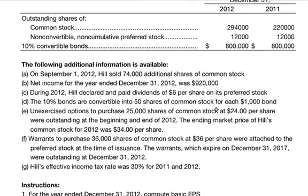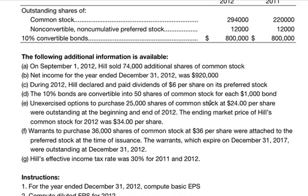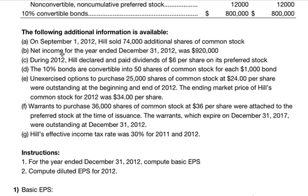The following information is available: on September 1st 2012, Hill sold 74,000 additional shares of common stock. They had net income for the year ended December 31st, 2012 of $920,000. During 2012, Hill declared and paid dividends of $6 per share on its preferred stock. The ten percent bonds are convertible into 50 shares of common stock for each $1,000 bond.